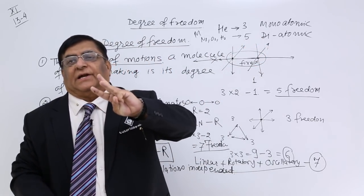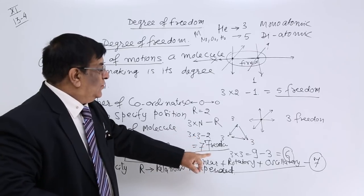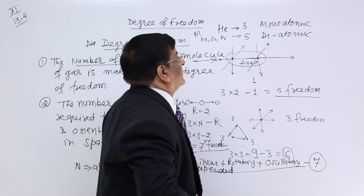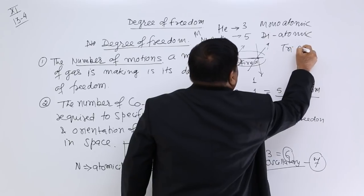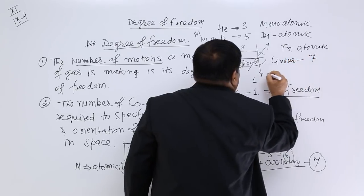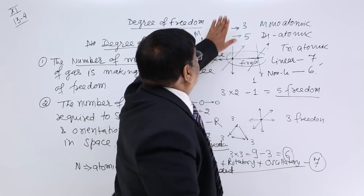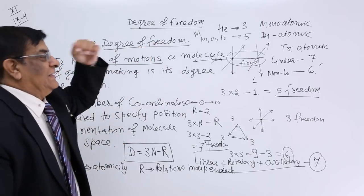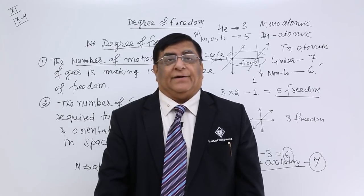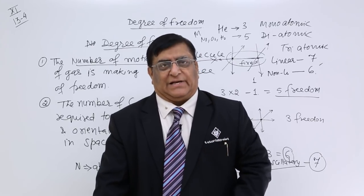For triatomic molecules there are two types: linear and non-linear. If it is linear, the degree of freedom is 7. If it is non-linear, the degree of freedom is 6. Please remember the two definitions of degree of freedom and this formula. After this, we can study where to use this degree of freedom, and that is the very famous law of equipartition of energy, which we will do in the next lecture. Thank you.